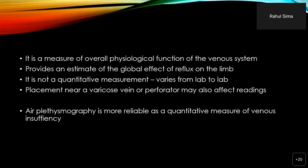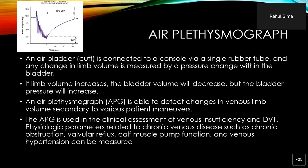Air plethysmography is more reliable as a quantitative measure of venous insufficiency. An air cuff is connected to a console via a single rubber tube and any change in limb volume is measured by a pressure change within the bladder. If limb volume increases, bladder volume decreases but bladder pressure increases. The air plethysmograph is used in clinical assessment of venous insufficiency and DVT. Physiological parameters related to chronic venous disease — chronic obstruction, reflux, muscle pump function, and venous hypertension — can all be measured.